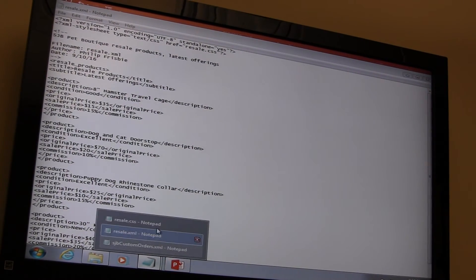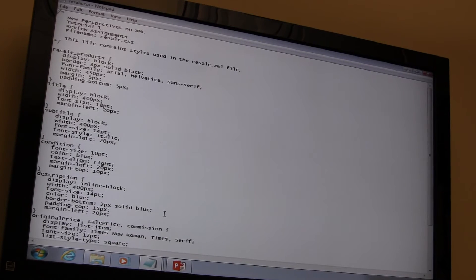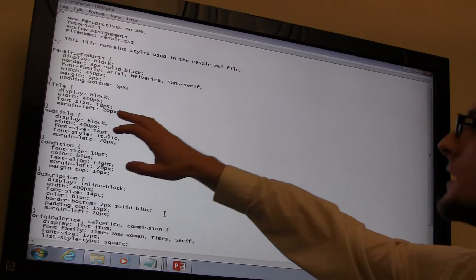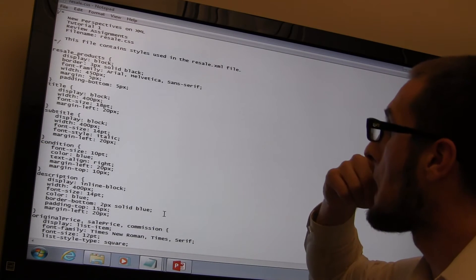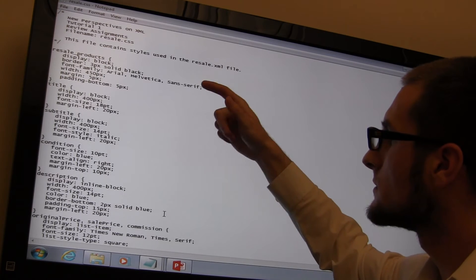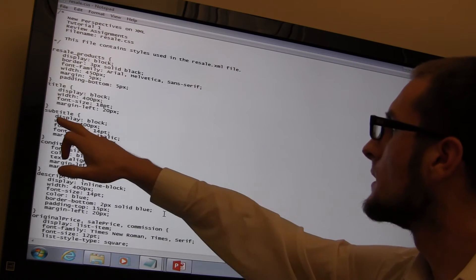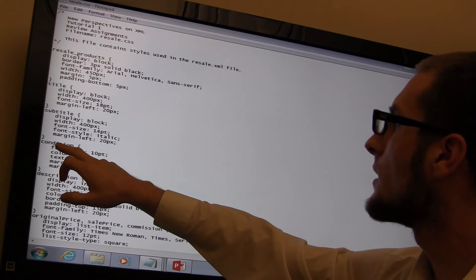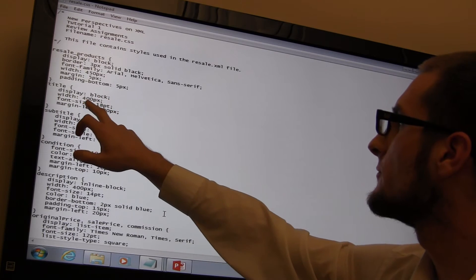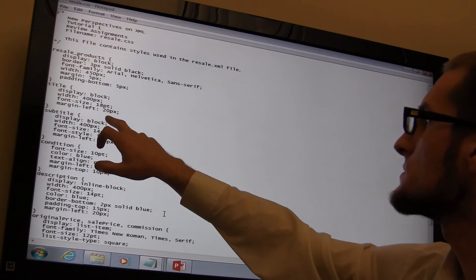And then the CSS, which has all of the fancy fonts and that's what I'm looking for. Just the layout, there we go. Each one has its own layout. So the title layout is block, 18 point font, margin left to 20 pixels.